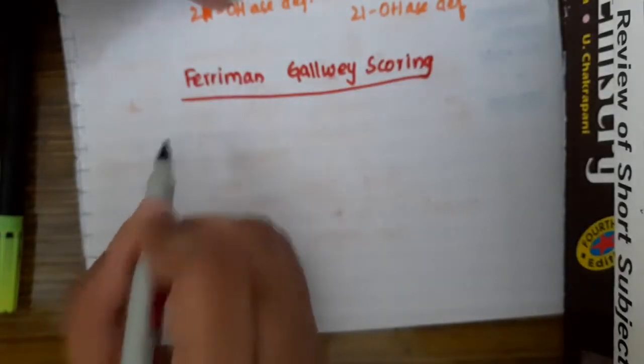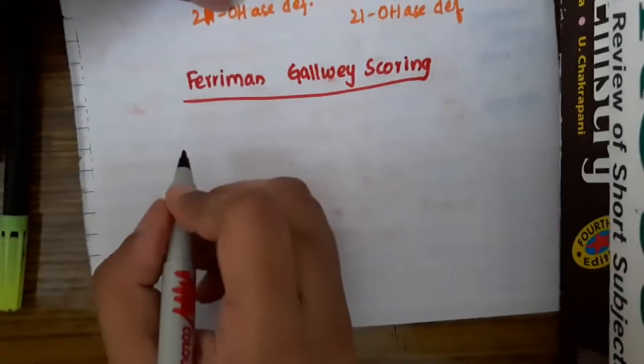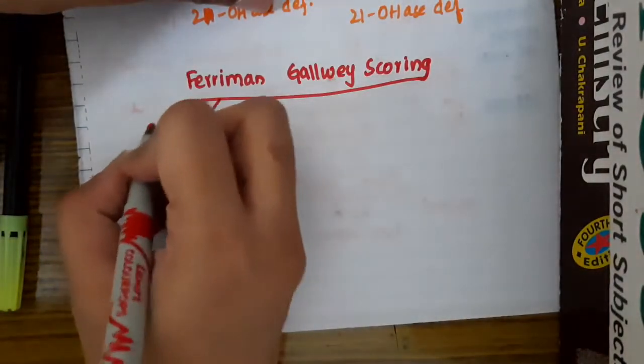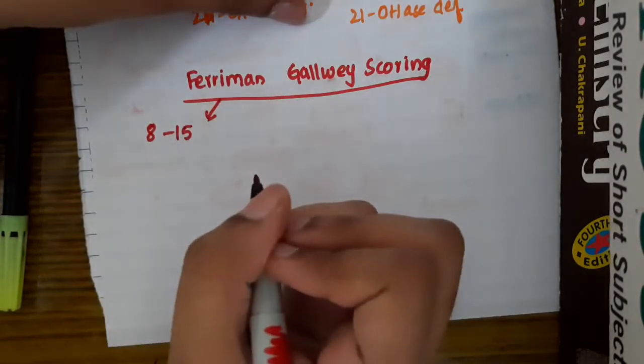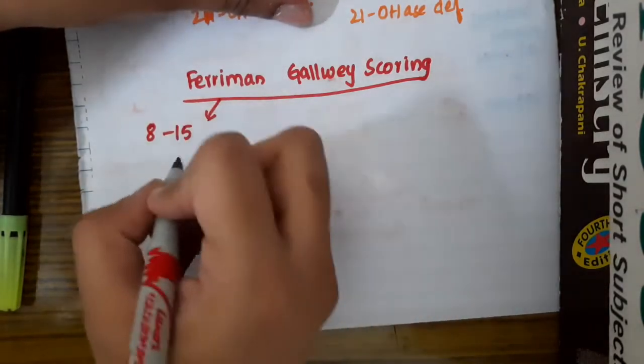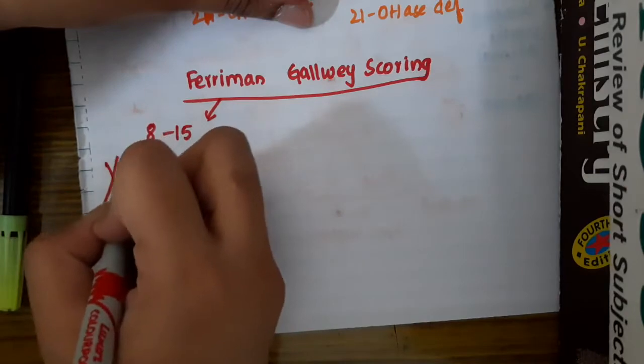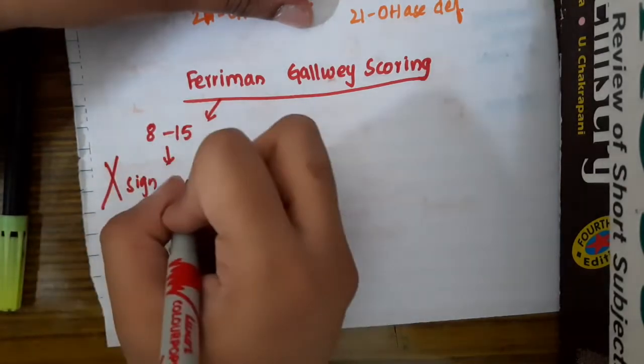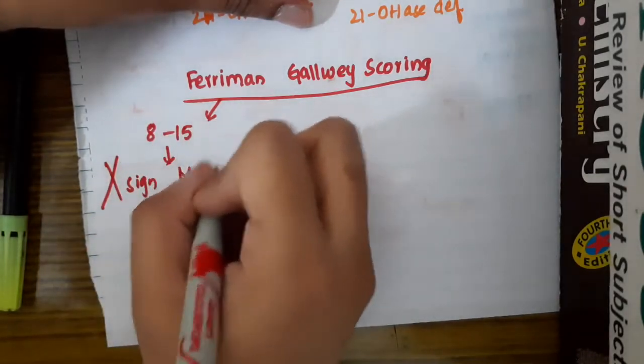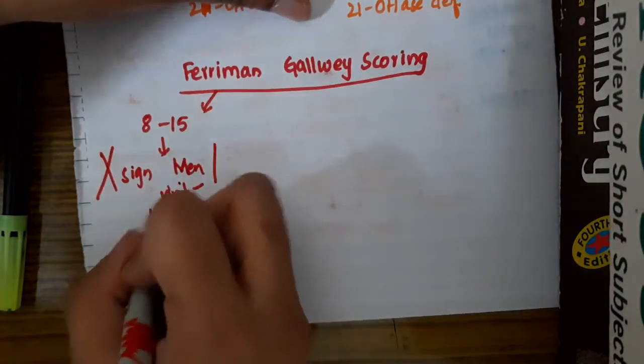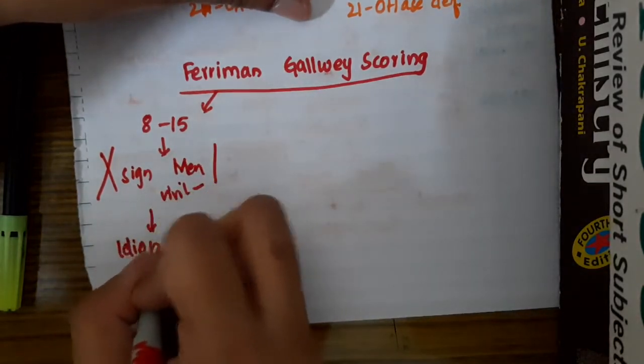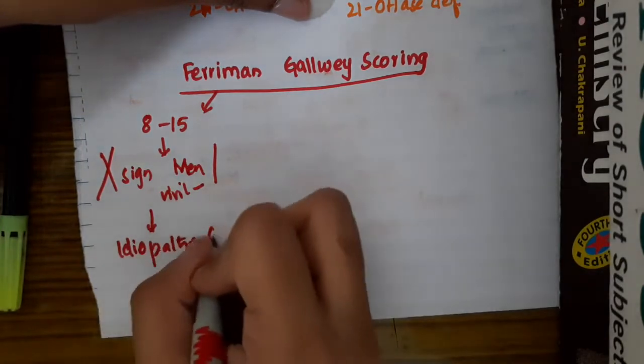When you see this Ferryman-Galway scoring and if you have got the score between 8 to 15 and there is no signs of either menstrual abnormalities or if there is no signs of virilization, then it can be due to idiopathic hirsutism.